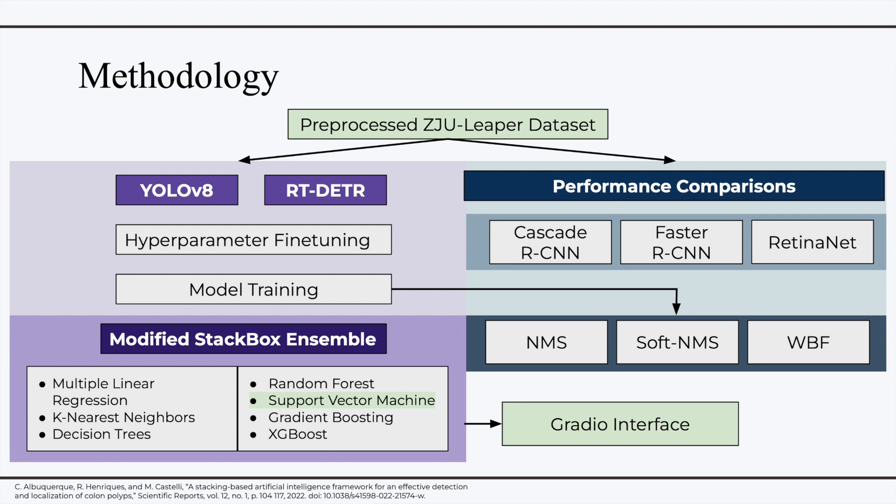The project flow was as follows. A subset of the ZJU Leaper dataset was pre-processed and used to train the YOLO V8 and RTDTR models. Hyperparameter fine-tuning was performed to select the optimal training configurations. The models' performance was benchmarked against other single-stage and two-stage models, such as Cascade RCNN, Faster RCNN, and RetinaNet. The trained YOLO V8 and RTDTR models were then used as base models to build a stacked ensemble model. This project involved several modifications to the original ensemble algorithm, including confidence score adjustments for duplicated predictions. A range of metamodels with different parameters was also tested, and finally a support vector machine regressor was chosen as the optimal metamodel.